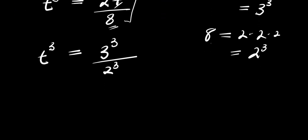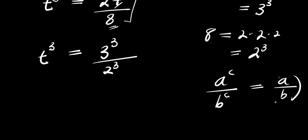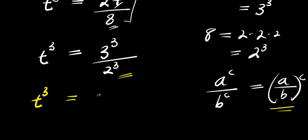The next step is to apply the identity: if you have a to the power of c divided by b to the power of c, this equals a divided by b, raised to the power of c. Applying this identity, we get t to the power of 3 equals 3 divided by 2, all to the power of 3.